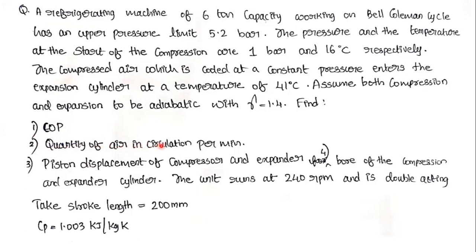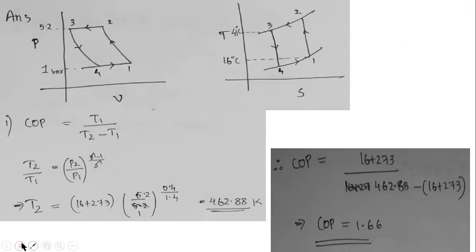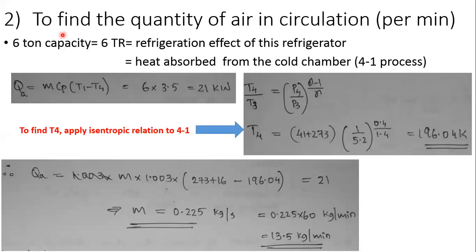For part two, we need to find the quantity of air in circulation per minute. The key clue is the 6-ton capacity of the refrigerator. Six tons of refrigeration (6 TR) represents the refrigeration effect — the heat absorbed from the cold chamber during process 4→1.